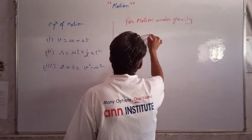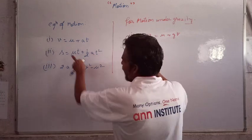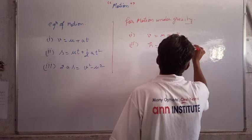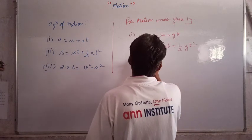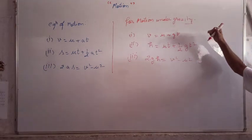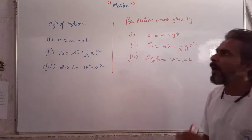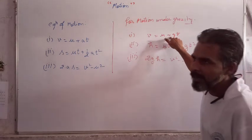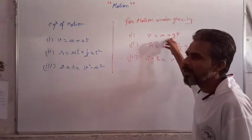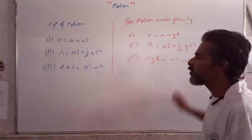So the first equation will become V equals U plus gt. The second equation will become, in place of S it becomes H for height: H equals ut plus half gt squared. The third equation becomes: v squared minus u squared equals 2gH. When the object is moving away from Earth — moving upward — then the value of g becomes negative. So the equations become: V equals U minus gt, H equals ut minus half gt squared, and v squared minus u squared equals negative 2gH.